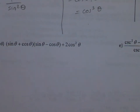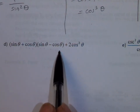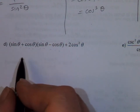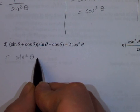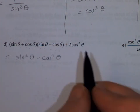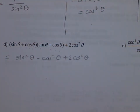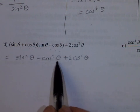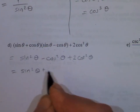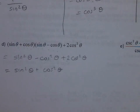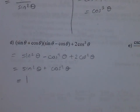We have sine theta plus cosine theta times sine theta minus cosine theta — again a difference of squares — so you can write this as sine squared theta minus cosine squared theta. Simplifying gives negative cosine squared theta plus 2 cosine squared theta, so you get cosine squared theta, which equals 1 by the famous identity.